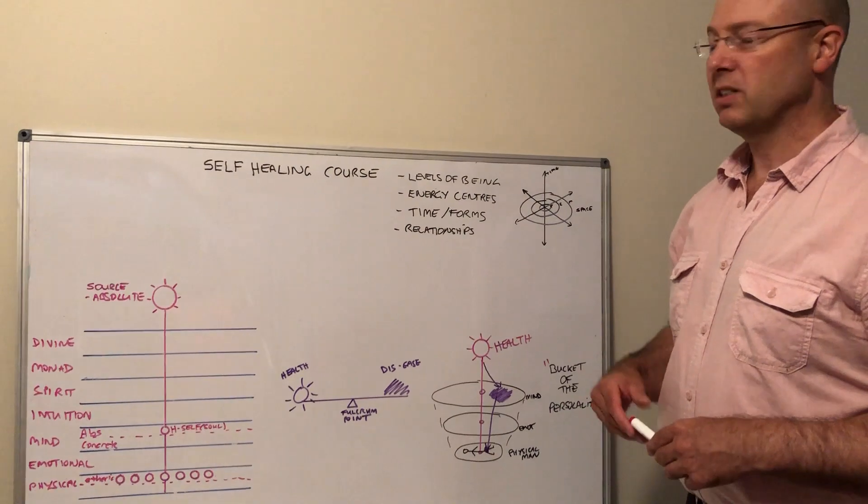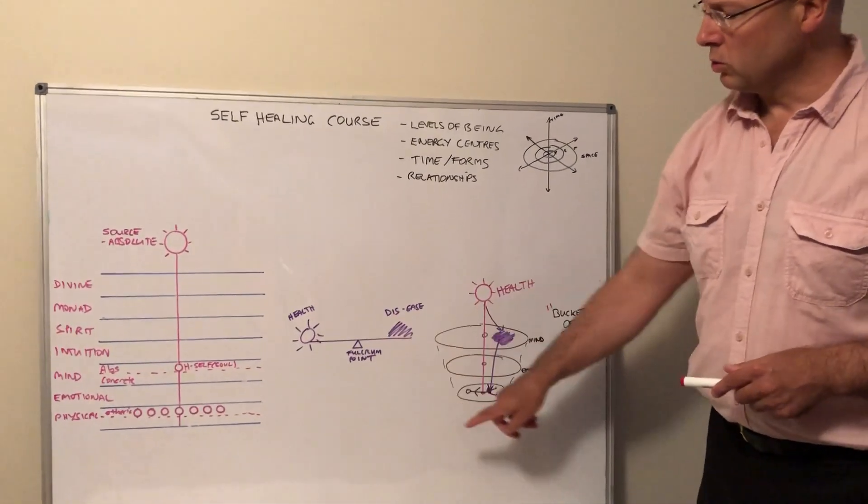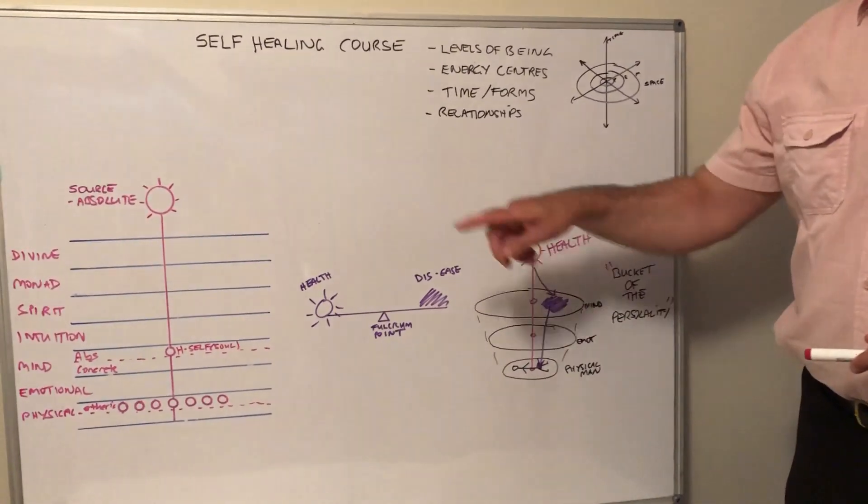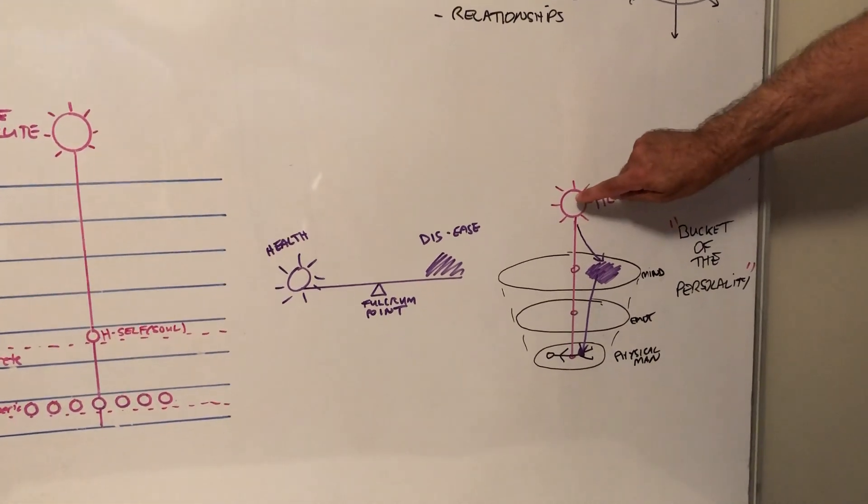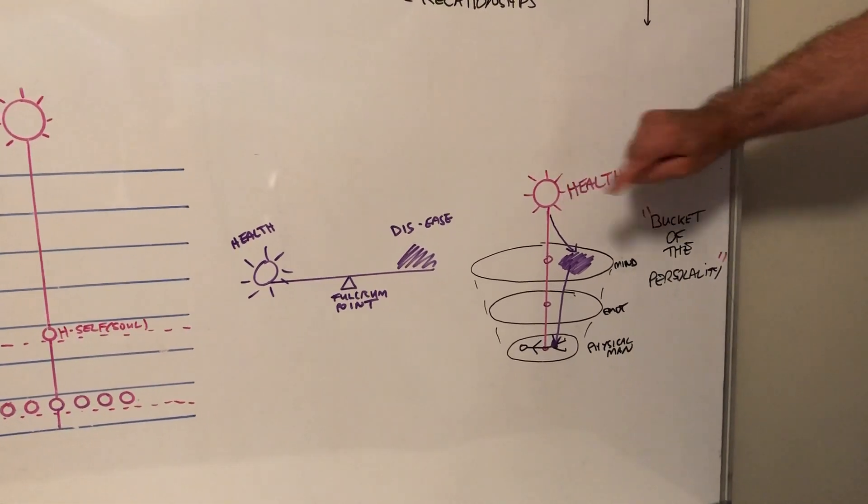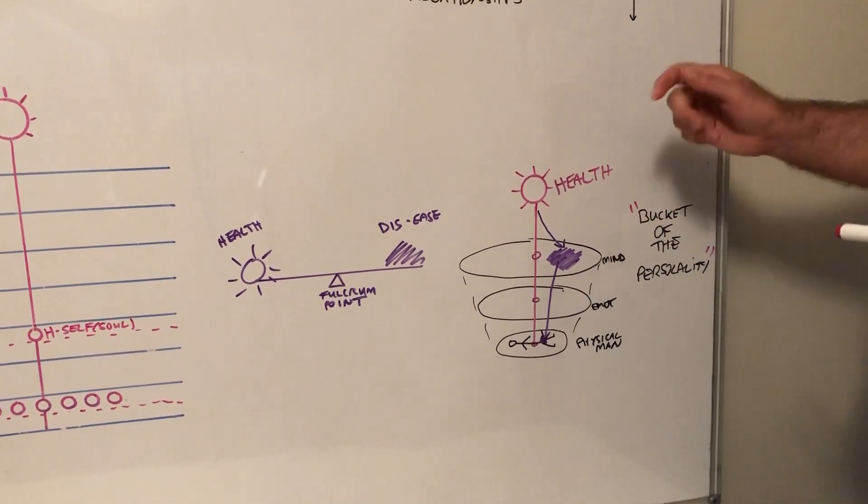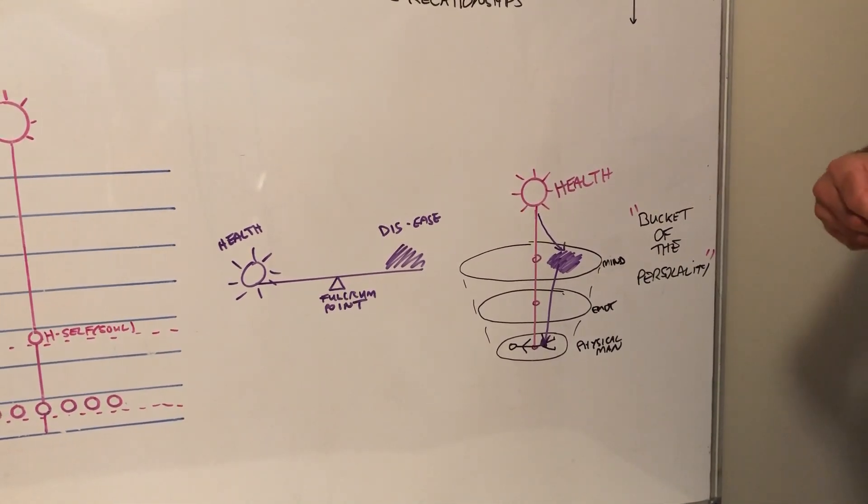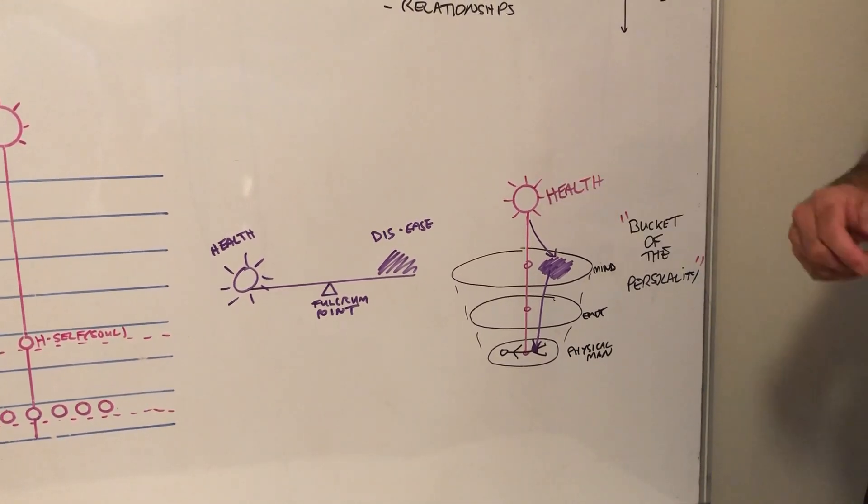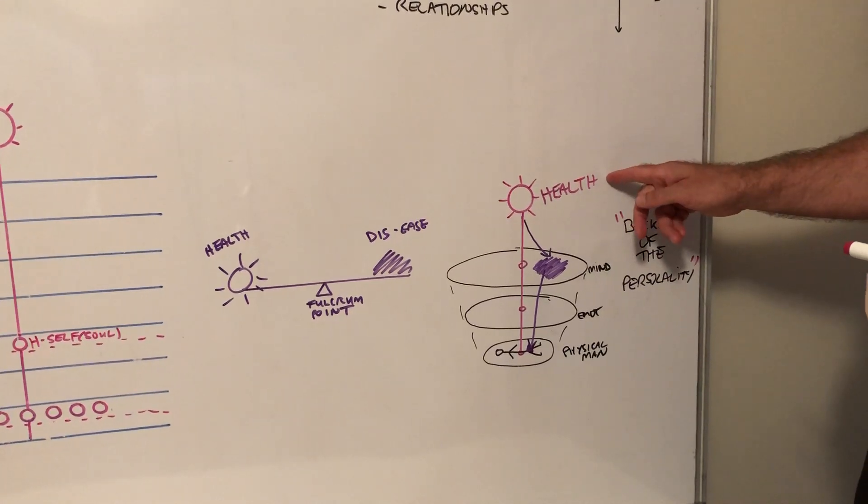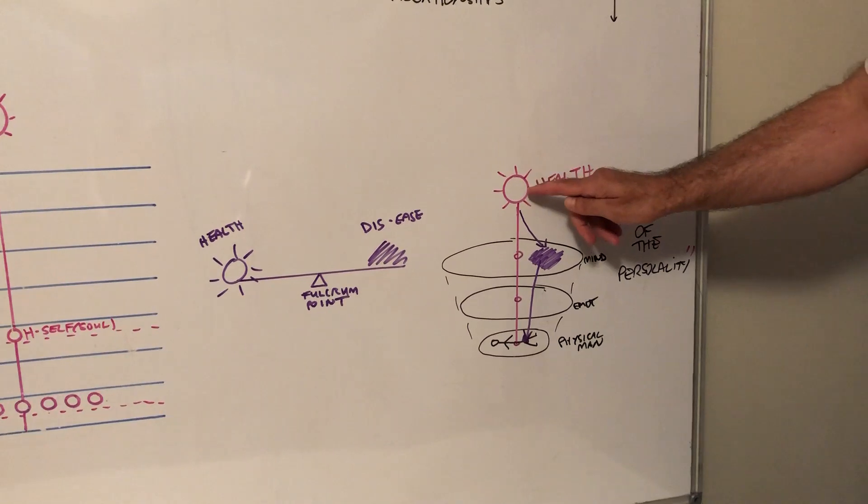In this diagram, I've drawn a circle, a sun, that represents health. You could call that health, your higher self, truth - anything positive and helpful in your life. Health typically represents ease, balance, and function.